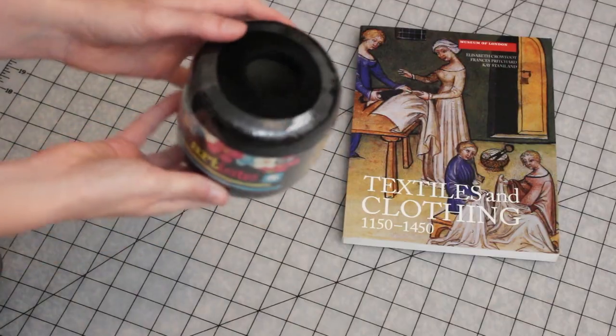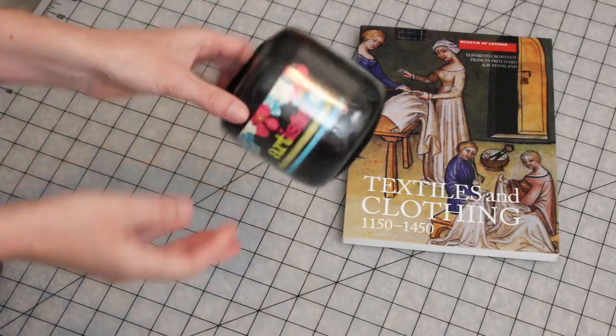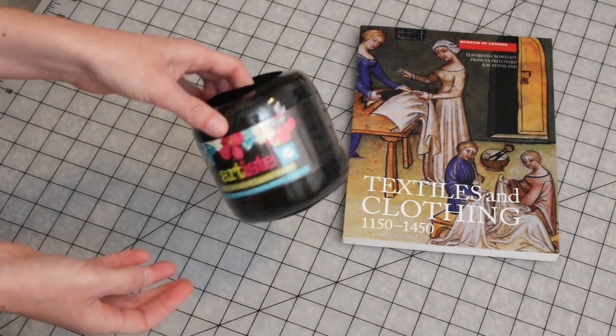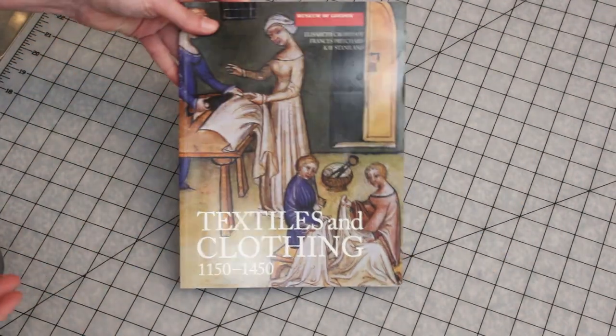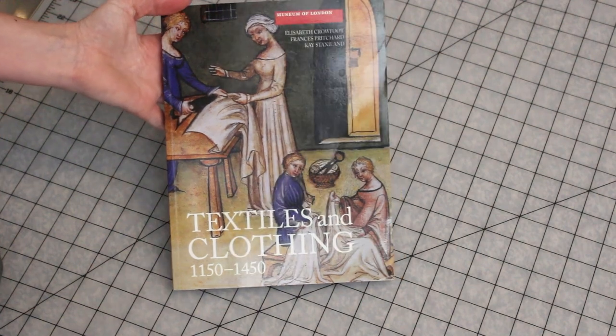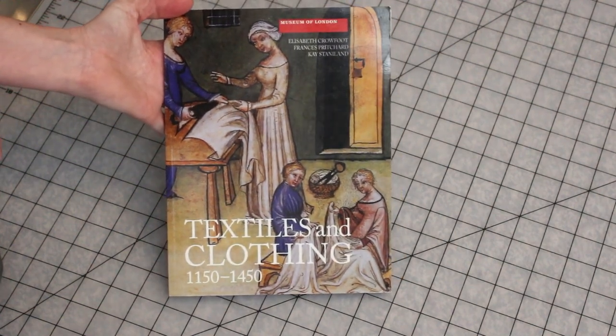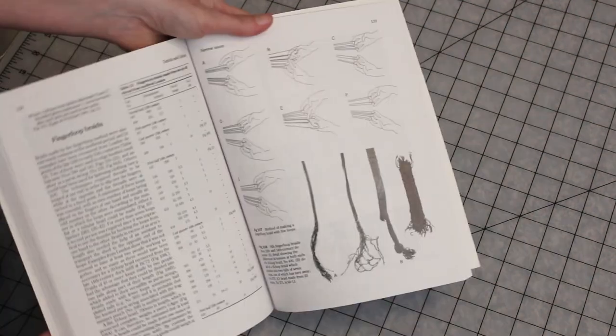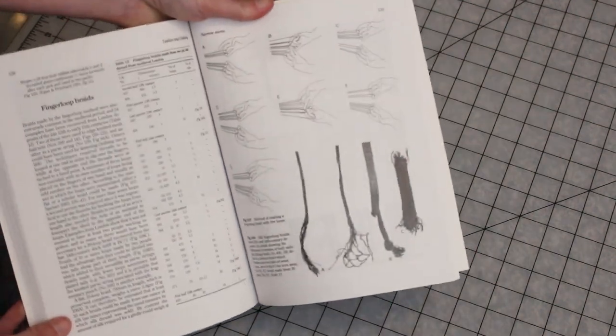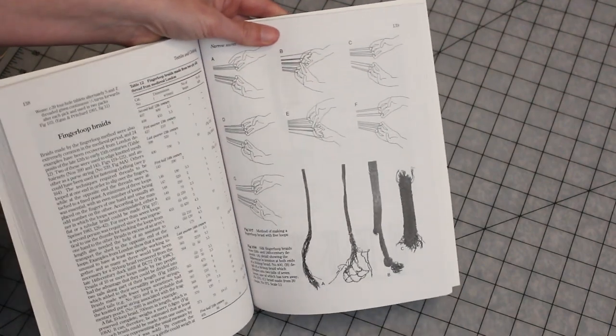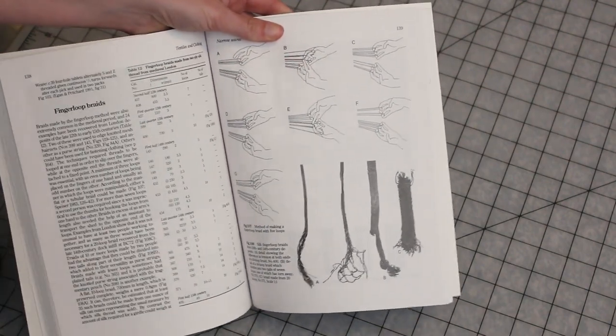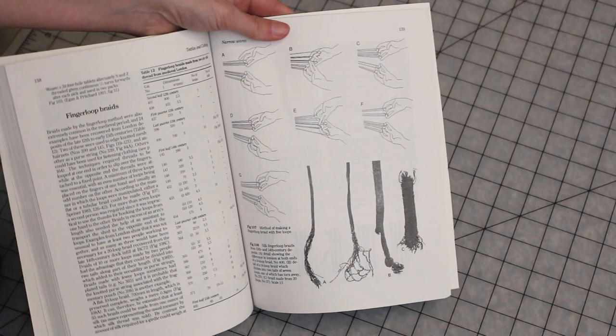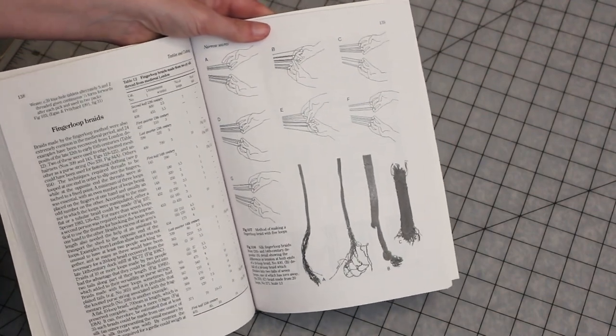This is going to be finger loop braided cord, which is a historical technique. I'll be using this size 10 crochet thread to create my finger loop cord. The technique I'm using is actually found in Textiles and Clothing 1150 to 1450, a Museum of London publication. This book talks about finger loop braids and gives you a technique to follow based on some of the extant finds, and that's the technique I will be using for this braid.